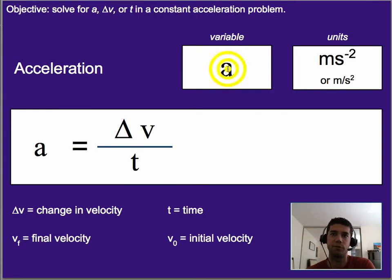Acceleration, the variable is a. The units are meters per second squared. It can also be written like this, although we prefer it in the exponent notation. The equation for it is a equals delta v over t, where delta v means change in velocity.